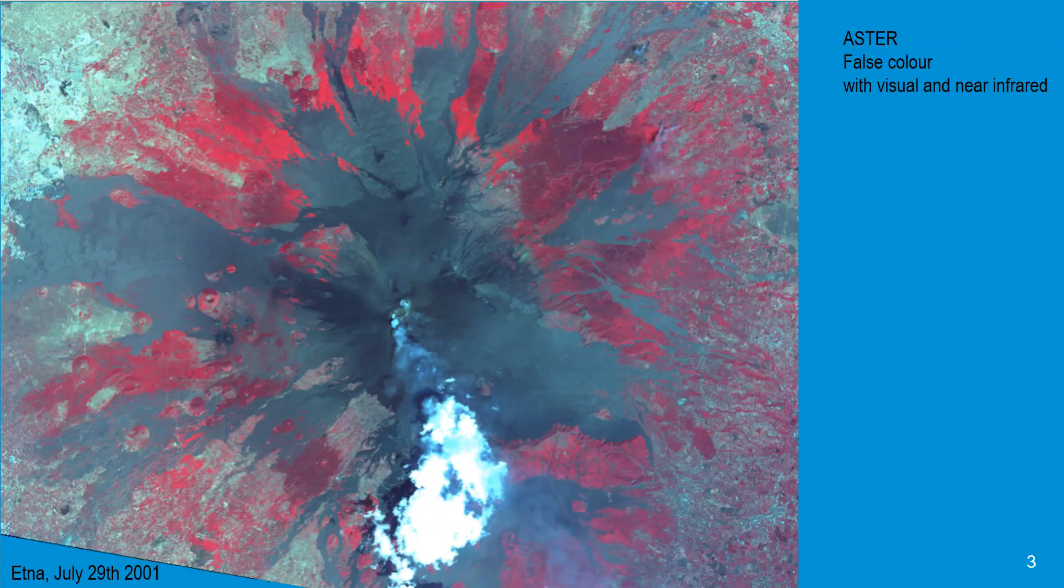With thermal remote sensing we can detect heat. This can be best illustrated by looking at a volcano. Here we see an Aster image during an eruption of Mount Etna in July 2001.